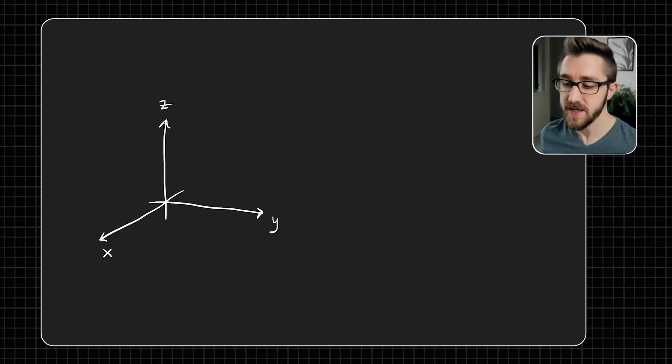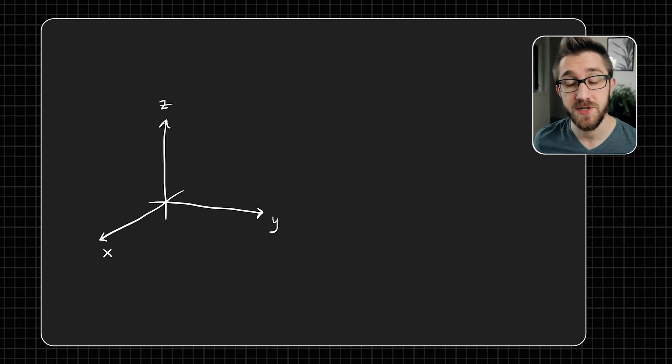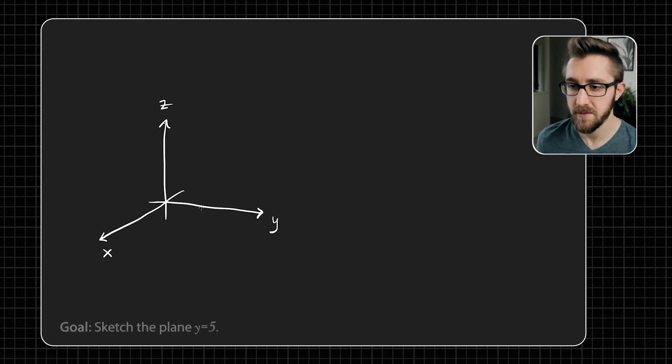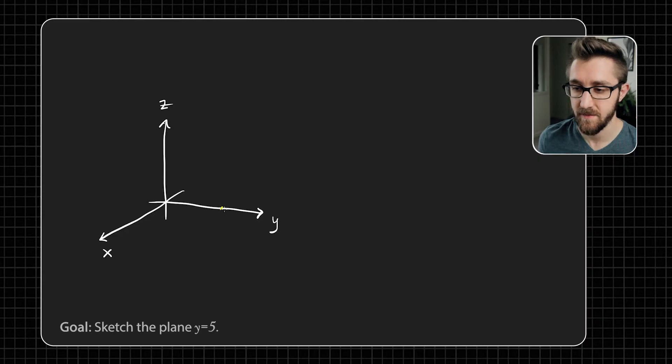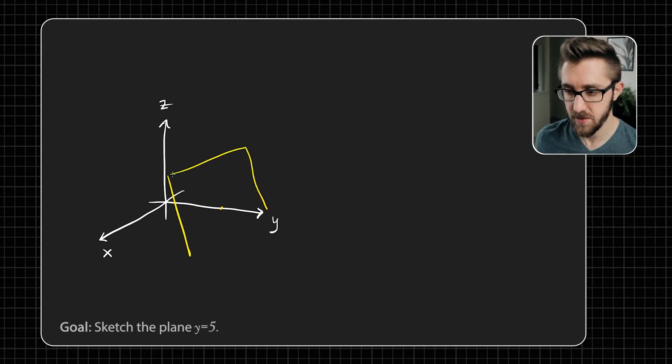So my first tip for you is when it comes to drawing planes that are parallel to one of the coordinate planes in your 3D axes, there's a way to draw it that really makes it look like it fits in the picture. But let me show you what I mean. So here are my 3D axes. And if I want to draw the plane y equals five, well, I know that'll be a plane that should intersect the y-axis at five. I haven't marked units, but say that's here.